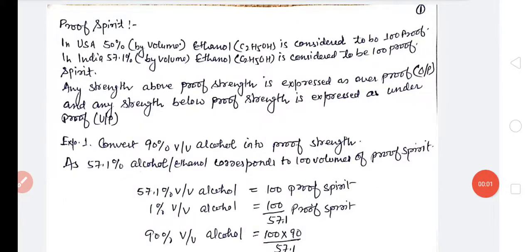The topic running is pharmaceutical calculation. In pharmaceutical calculation, I have completed the calculation of child dose. If we have an adult dose, we can calculate the child dose by using different formulas.